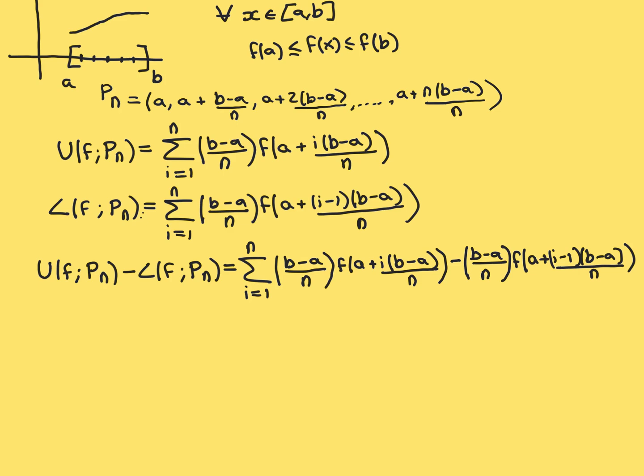Let's continue with our proof that a monotonically increasing function over the interval AB is going to be Riemann integrable over that interval. We have these formulae for the upper and lower Riemann sums of this function for general partitions where we are fragmenting the interval into n equal pieces.